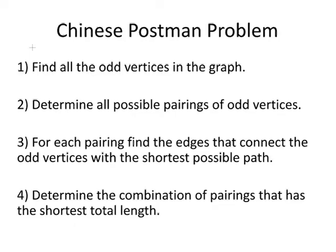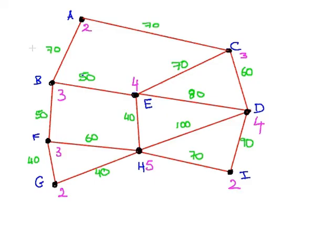Let's look at an example to get a sense of that. Here we have a graph with nine vertices, A to I, and we also have the lengths between vertices indicated. For example, the length between A and C is 70. For another example, between E and D, the distance is 80.